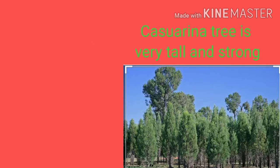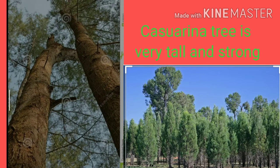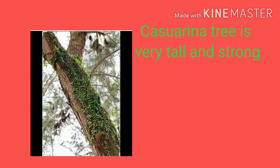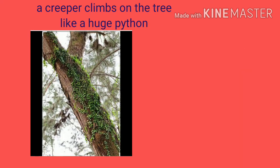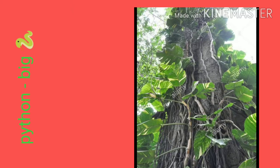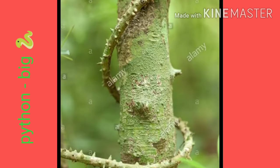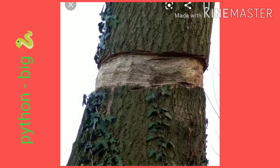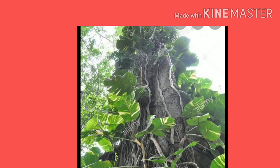In the first stanza, the poetess describes the Casuarina tree as a very tall and strong tree with a creeper winding around it like a huge python or big snake. The trunk of the tree is rugged and has scars because of the tight hold of the creeper. The creeper climbs up to the top of the tree, as if it can touch the stars or the sky.